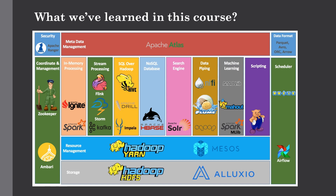We have also seen NoSQL databases, which give us the flexibility to change our schema over time, making them well-suited for agile development. We saw Apache HBase, which is native to Hadoop and integrates well with HDFS. We also saw Cassandra, which is a highly available NoSQL column-family database. And we saw MongoDB, which stores documents in JSON format, again providing schema flexibility. We also covered the CAP theorem, comparing all these databases including relational databases to understand which database is right for different use cases.